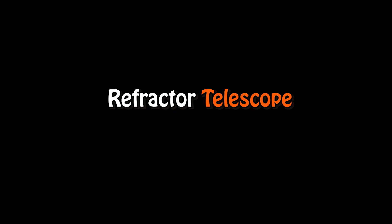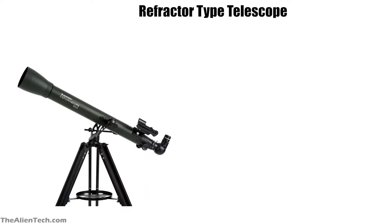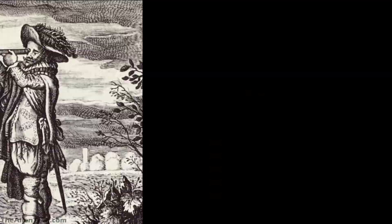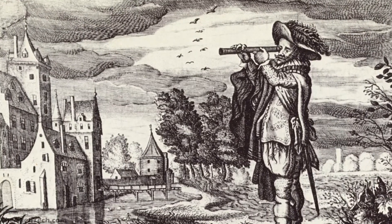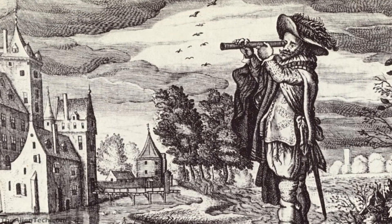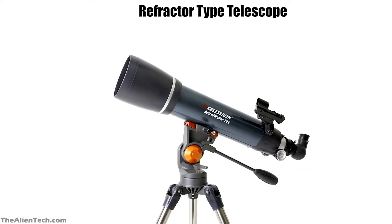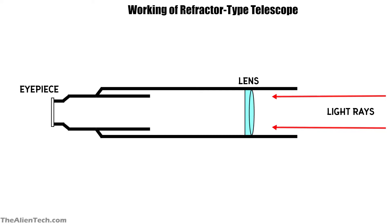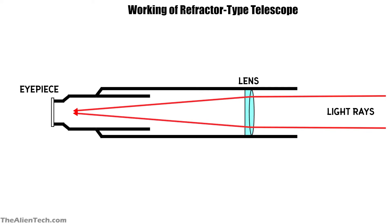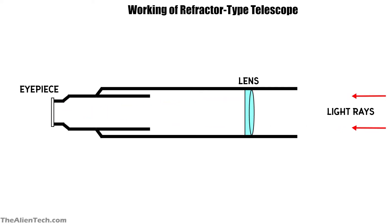A refractor telescope is the origin of the telescope — the first telescope ever made was the refractor telescope. Its design is very simple: it has a lens at the front and an eyepiece at the back. The light passes through the telescope lens to the eyepiece, and the distance light travels from the lens to the eyepiece is its focal length.